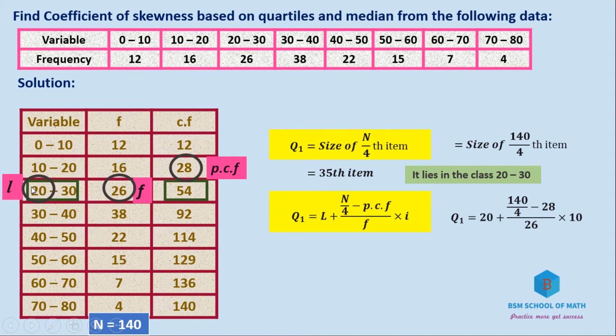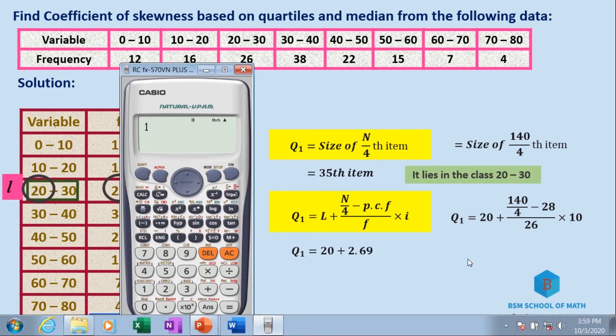Q1 equals L, which is 20, plus (140/4 - 28)/26 times the interval 10. So Q1 = 20 + (35 - 28)/26 × 10 = 20 + 7/26 × 10 = 20 + 2.69 = 22.69. Therefore Q1 equals 22.69.